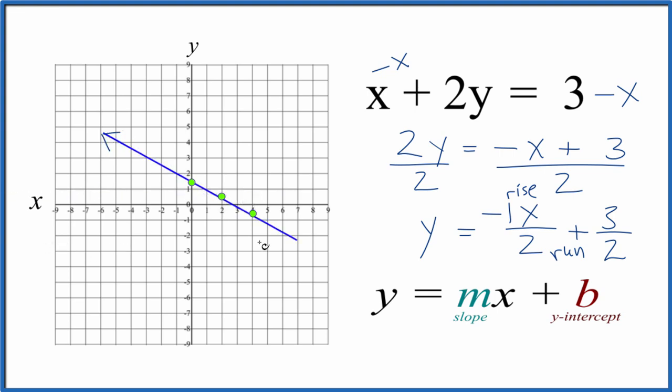And then we can put arrows to show that it goes to infinity, and this is the graph for x plus 2y equals 3. You could also use a table of values to graph x plus 2y equals 3, and you'd end up with this very same graph here. This is Dr. B, and thanks for watching.